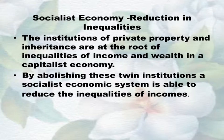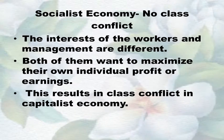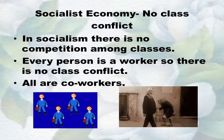The planning authorities fix targets for various sectors and ensure efficient utilization of resources. Number four: Reduction in inequalities — the institutions of private property and inheritance are at the root of income and wealth inequalities in a capitalist economy. By abolishing these institutions, a socialist economic system is able to reduce inequalities of income. Perfect equality in income and wealth is neither desirable nor practicable. Number five: No class conflict — in capitalism, the interests of workers and management differ. Both want to maximize their own earnings, resulting in class conflict. In socialism, there is no competition among classes; every person is a worker, so all are co-workers with no class conflict.